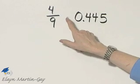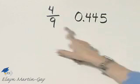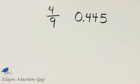Let's insert an inequality or equality statement, and let's make this a true statement. Here we have 4 ninths. Here we have 445 thousandths.